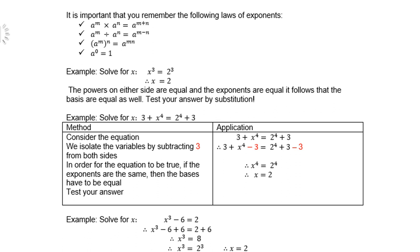Next example: x to the power of 3 minus 6 equals 2. I add 6 to both sides because I want 6 to cancel on the left-hand side. Then I get x cubed equals 8. And of course, 8 is 2 to the power of 3. So there you are, x equals 2.